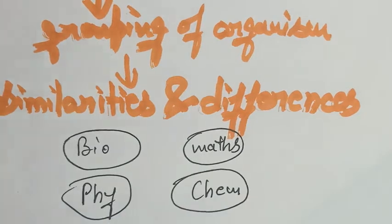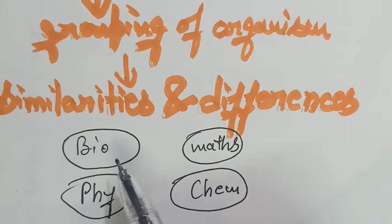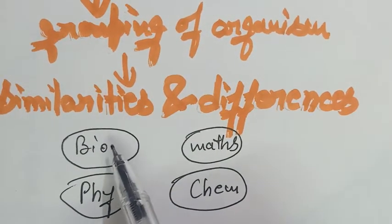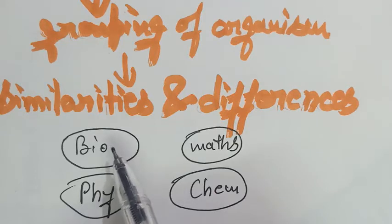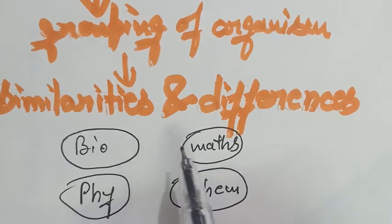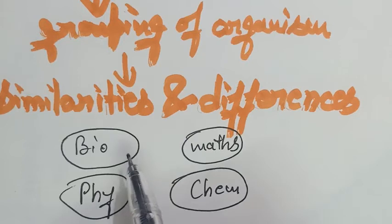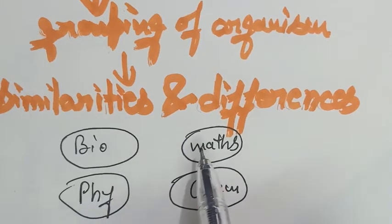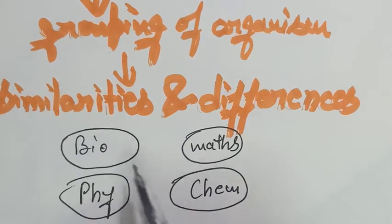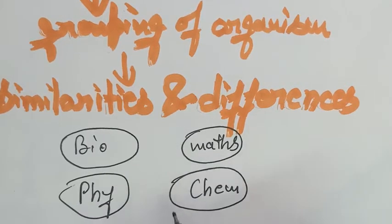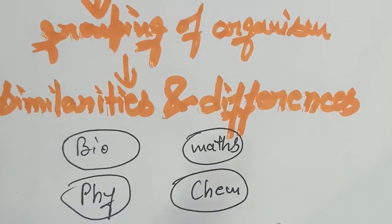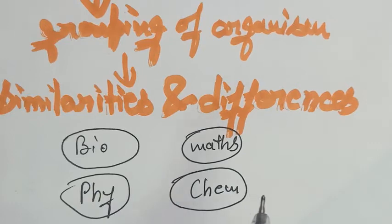Like in these books, the things are there on the basis of their similarities, but they are kept in different subjects because of their differences. So this grouping of subjects is also a type of classification. So I think everything is very clear up to here.